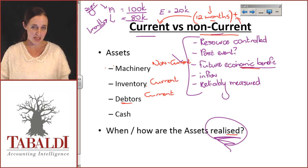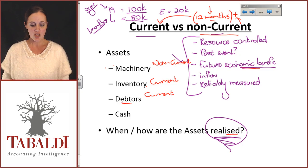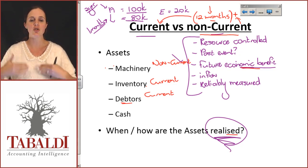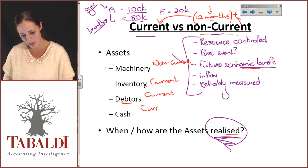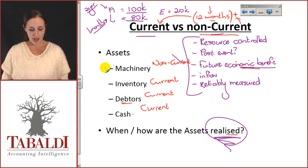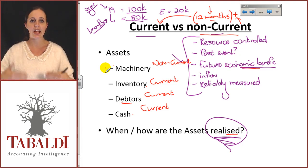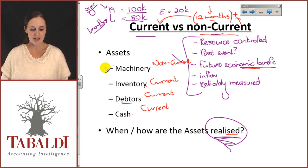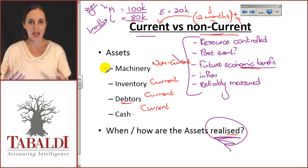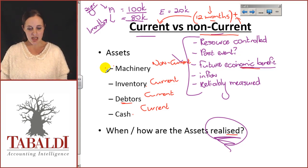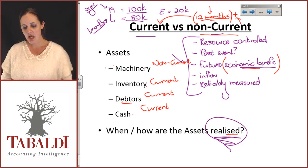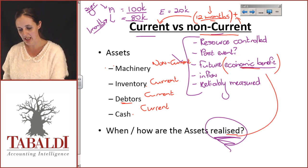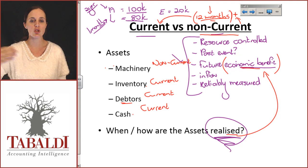If your debtors are not paying you within 12 months, then you shouldn't have them — your debtors are going to be in current. Cash is instant — anything you have in cash, cash in bank, petty cash, cash float — anything on hand is instant; you realize the benefit instantly, which means it is current. So when you look at your assets, current versus non-current: the difference is things realized within 12 months versus things realized beyond 12 months. Realization means how long and when you're going to get the economic benefits.